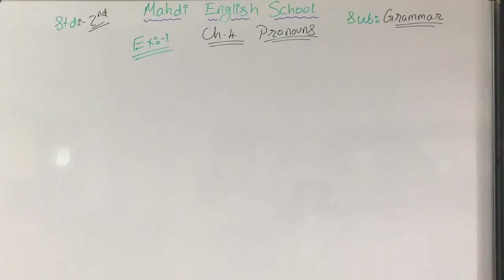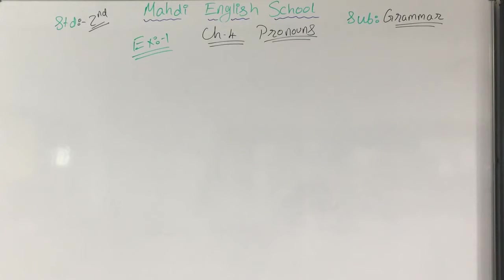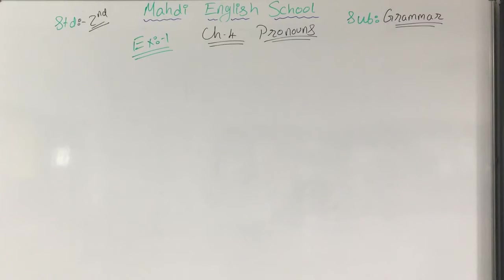If you remember, exercise number 1 was 'circle the pronoun in the sentences.' So you had to circle the pronoun in sentences A, B, C, D, and E — that means 5 sentences we have already solved. Another 5 sentences we are going to solve now, and with this our exercise number 1 will be over. I hope you are all ready to write the questions of exercise number 1.